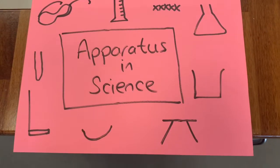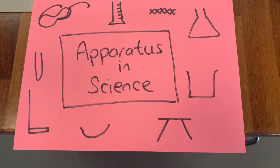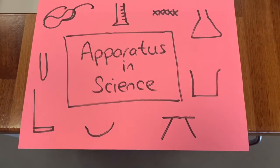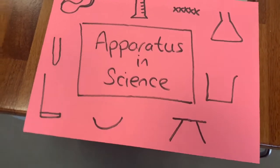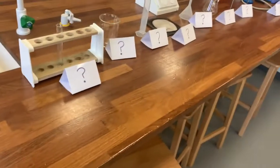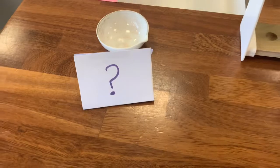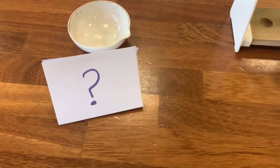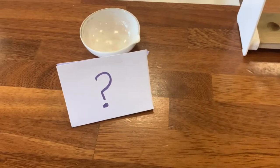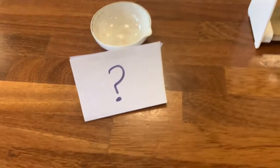Hopefully you've had a chance to look at that apparatus, watched the video, and filled it in your book. Now we're ready to test how well we've done. I'm going to run through a list of apparatus and I want you to either pause the video or quickly jot down the name and what the diagram looks like. I'll show you how the first one is going to work.